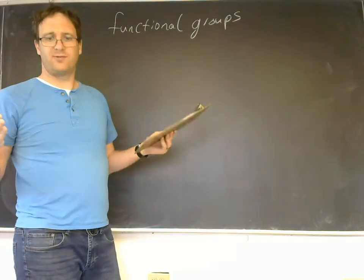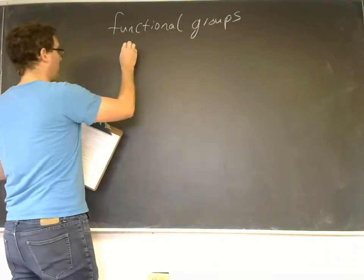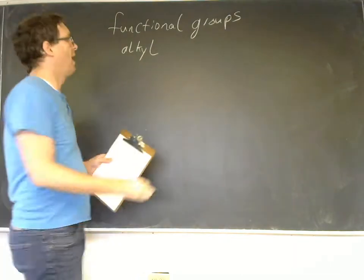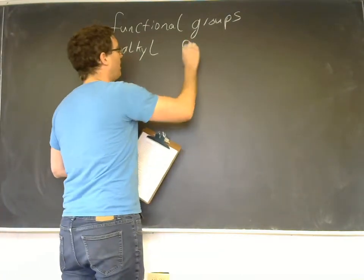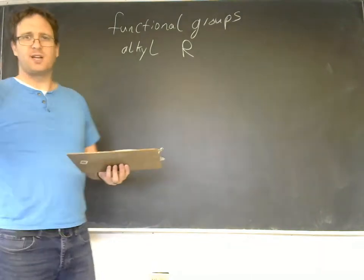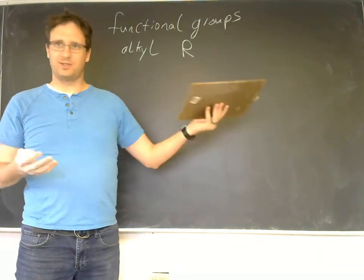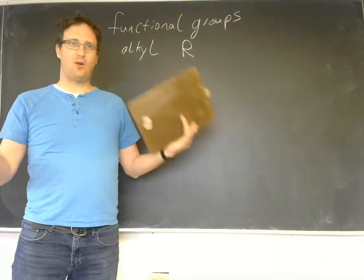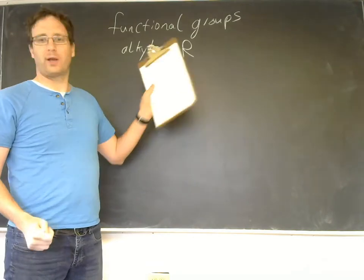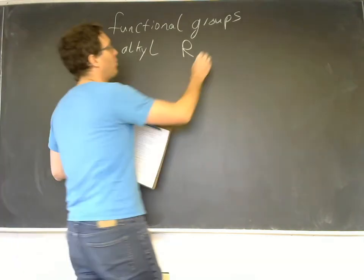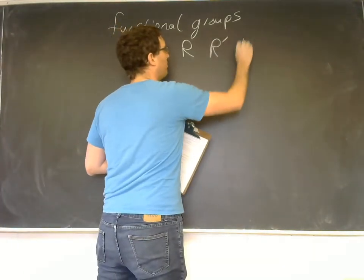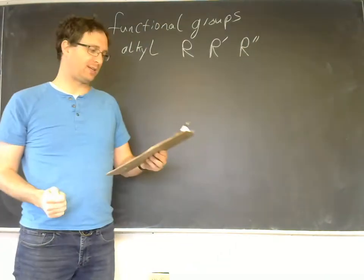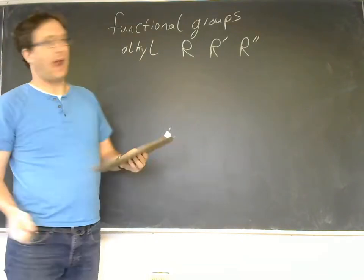The first functional group technically are alkanes, so we'll call those alkyl groups, and they're often represented by an R. Oftentimes it's not terribly important how many carbons are in a carbon chain - we just want to represent that whole carbon chain with one quick little letter R. If you've got more than one alkyl group, then you can use R prime and R double prime to keep them all separate.